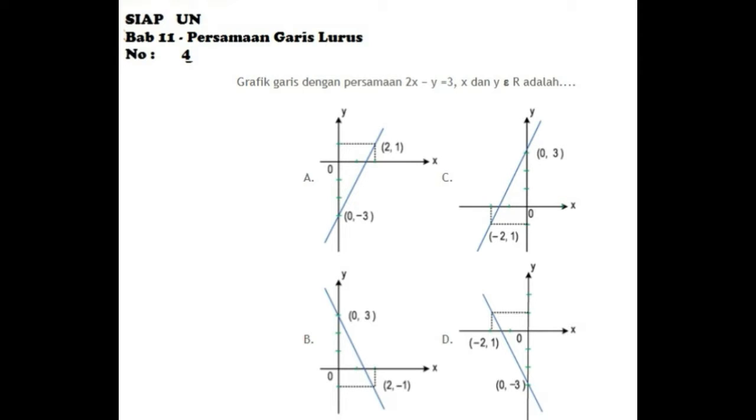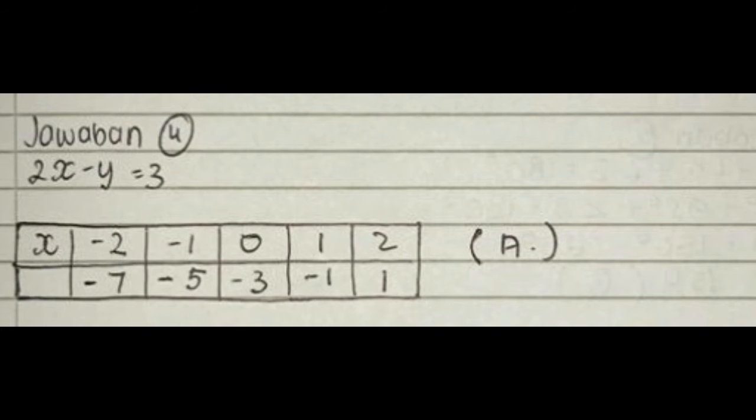Problem 4: Graph the line with equation 2x - y = 3, where x and y are members of R (real numbers). Solution: 2x - y = 3. The answer is A.